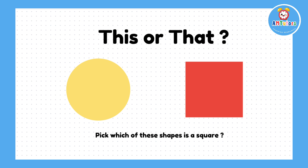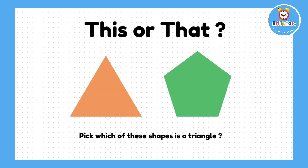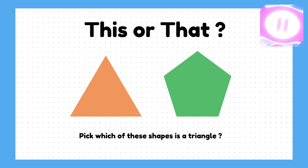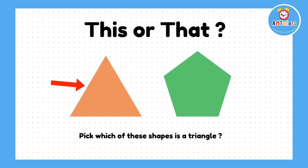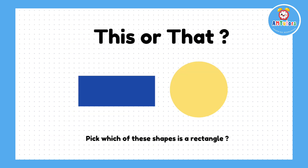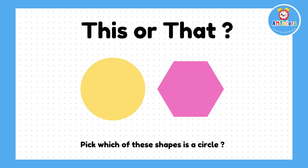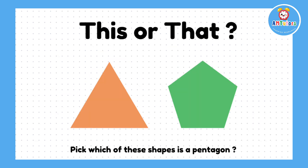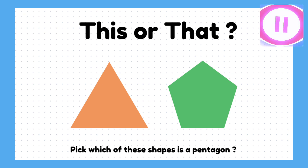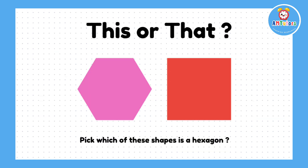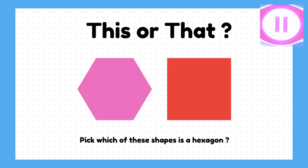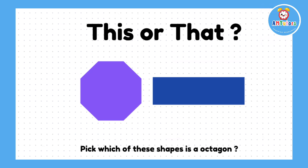Pick which of these is a square. Pick which of these shapes is a triangle. Pick which of these shapes is a rectangle. Pick which of these shapes is a circle. Pick which of these shapes is an octagon.